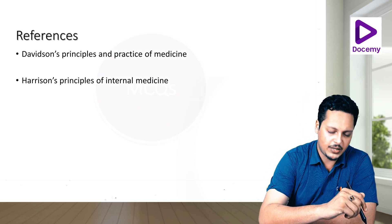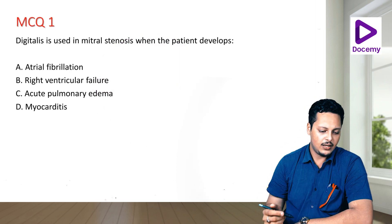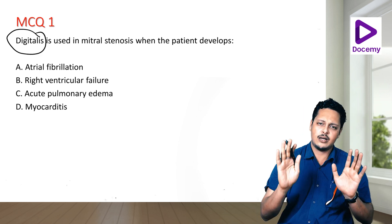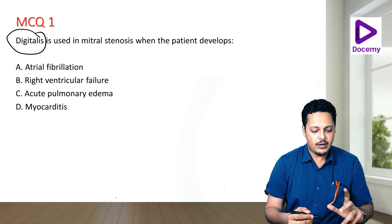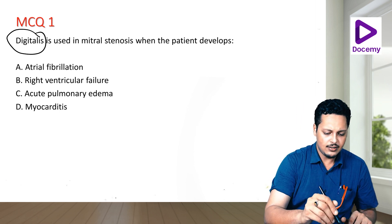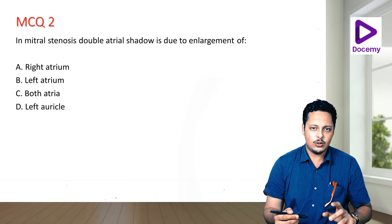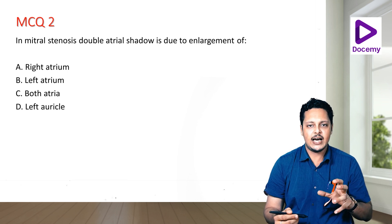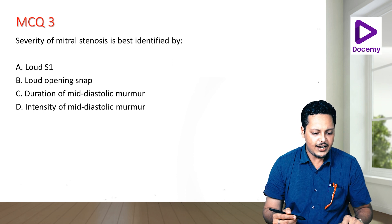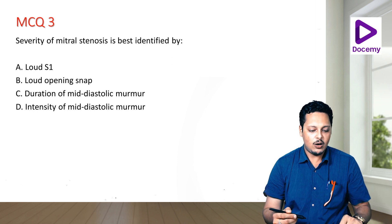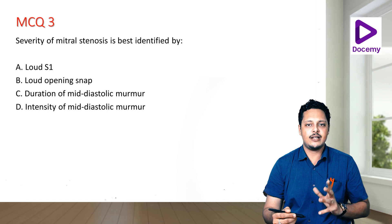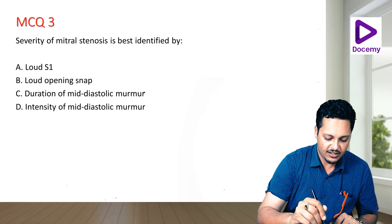MCQ 1: Digitalis is used in mitral stenosis when the patient develops — answer: atrial fibrillation. MCQ 2: In mitral stenosis, the double atrial shadow is due to enlargement of — answer: the LA. MCQ 3: Severity of mitral stenosis is best identified by — answer: duration of the mid-diastolic murmur. Loud S1 and loud opening snap tend to disappear as calcification worsens or if there is associated MR.